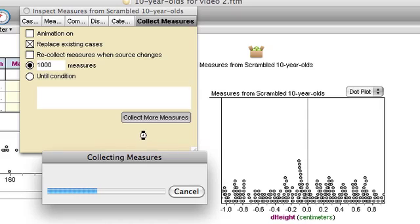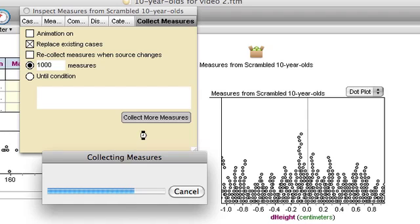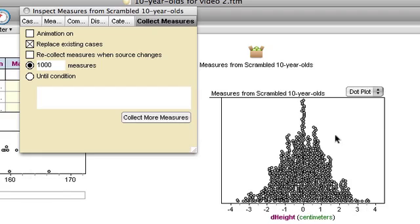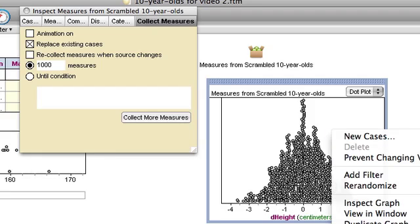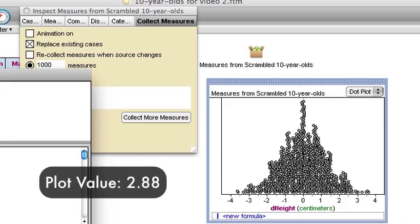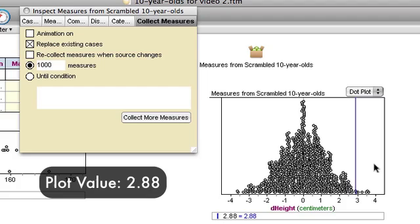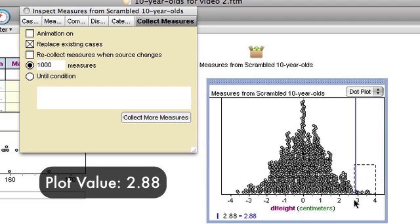We can see it getting bigger and bigger and bigger. And what was that value we were supposed to remember? 2.88. Let's do plot value and put it on the graph. 2.88. There's the value. Did get some cases that were more extreme.